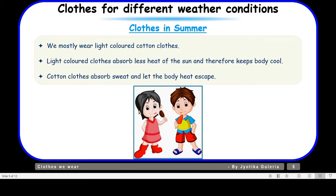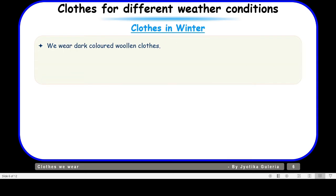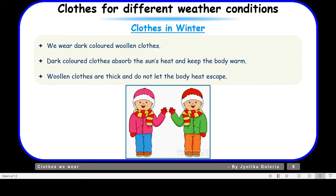Cotton clothes keep us comfortable. Now let us talk about clothes worn in winter. We wear dark-colored woolen clothes in winters. Dark-colored clothes absorb the heat of the sun and keep the body warm. Woolen clothes are thick and do not let the body heat escape — they trap the heat of the body and do not allow it to escape into the air, thereby keeping us warm.